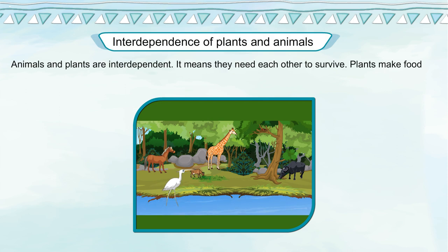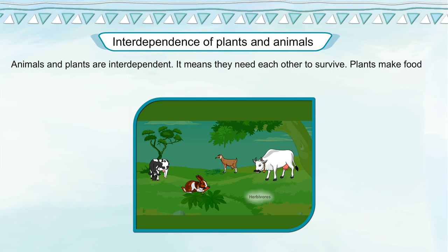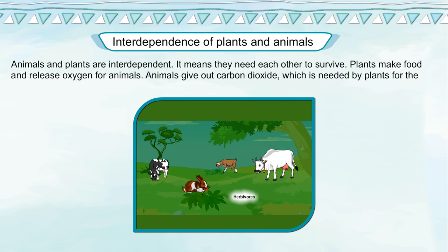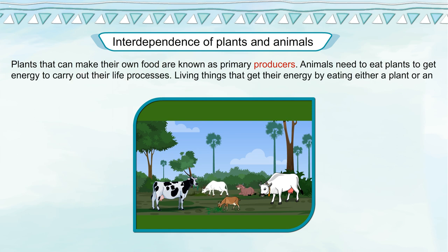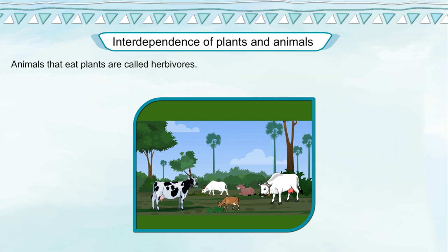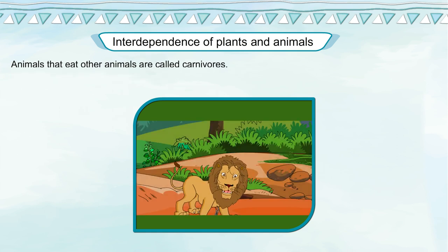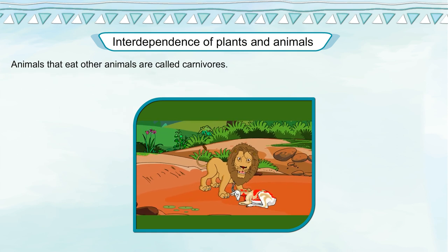Interdependence of plants and animals: animals and plants are interdependent — they need each other to survive. Plants make food and release oxygen for animals; animals give out carbon dioxide, which is needed by plants for photosynthesis. Plants that can make their own food are known as primary producers. Animals need to eat plants to get energy. Living things that get their energy by eating either a plant or an animal are called consumers. Animals that eat plants are called herbivores; animals that eat other animals are called carnivores.